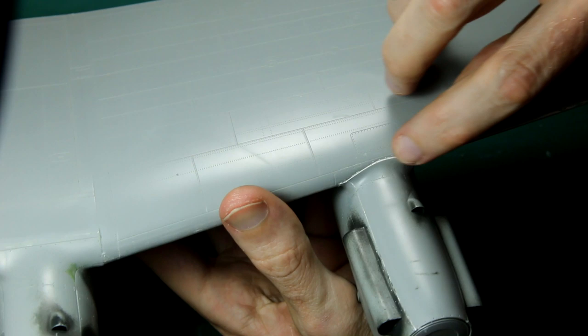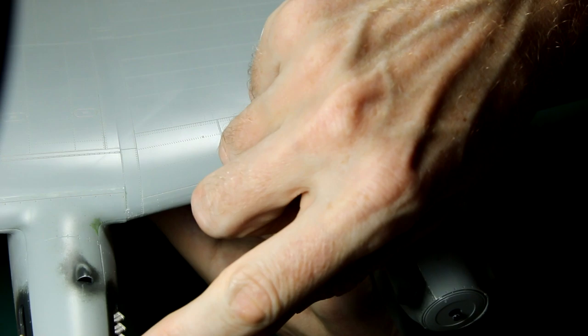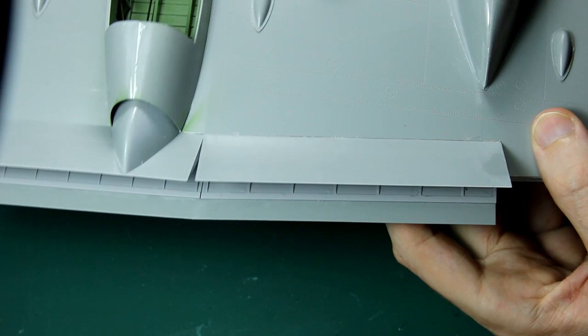So here you can see the port wing in its constructed state. Both the engines are on, propellers are not on yet, and you can see there's quite a lot of filling and sanding that I've had to do here for those gaps. And I'm sure that once I put a coat of primer on this, it will need a little bit more sanding and filling as well.